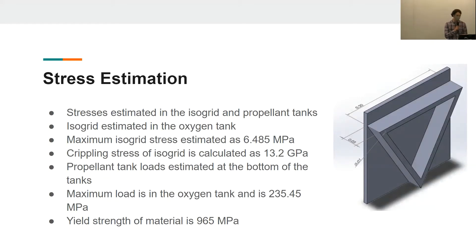Using those estimated loads, we will then estimate stresses in different sections of the structure. The two points that we chose to estimate are in the isogrid and the propellant tanks. The point of the isogrid we chose to estimate was actually in the cylindrical section of the oxygen tank.